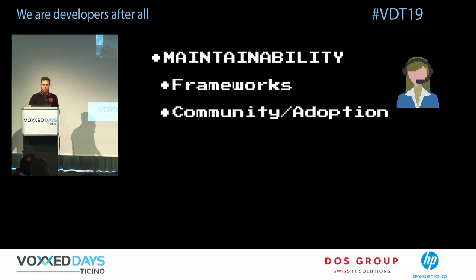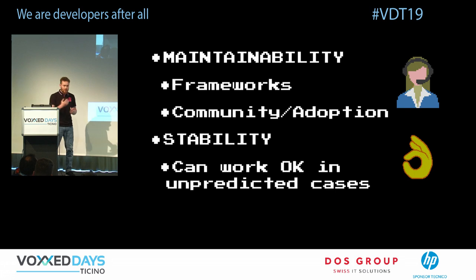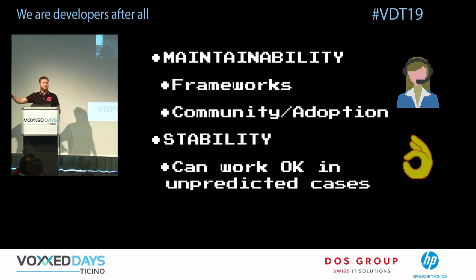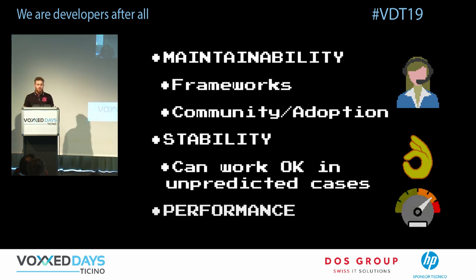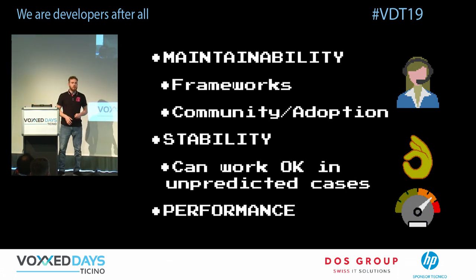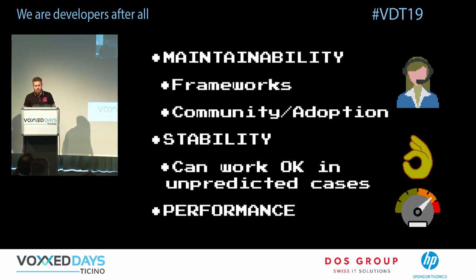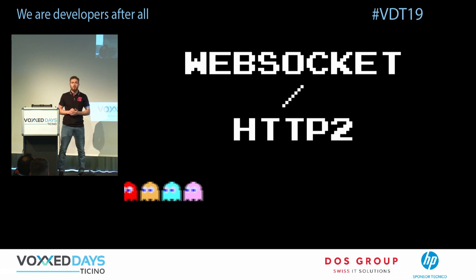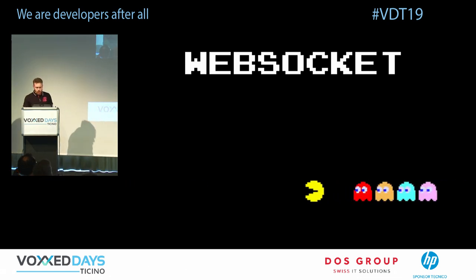Stability means your service works 24/7 every day of the year without problems — serving customers and bringing money to the business. Performance matters too: less money invested in cloud infrastructure the better — you don't want to spend millions of dollars per year on infrastructure when you can invest it elsewhere.